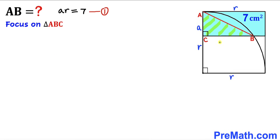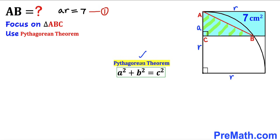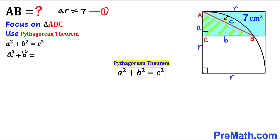Let's call that Equation 1. Now let's focus on right triangle ABC and apply the Pythagorean theorem: a² + b² = c². In this triangle, the side lengths are a and b, and the longest side — the hypotenuse — is AB. So we write a² + b² = AB². Let's call this Equation 2.